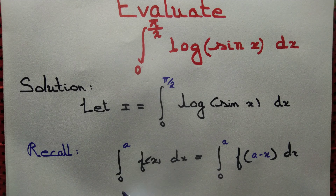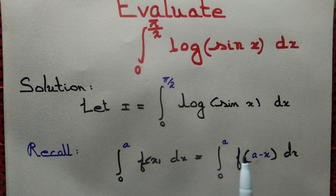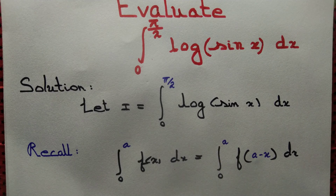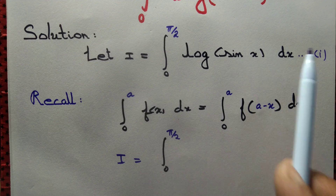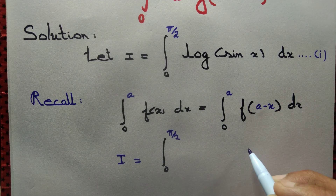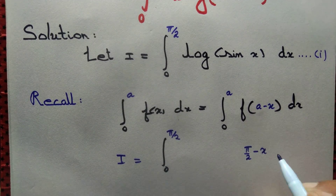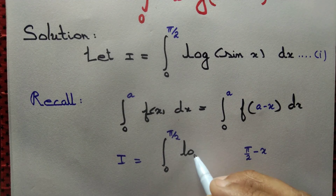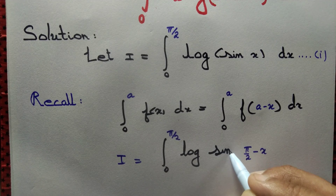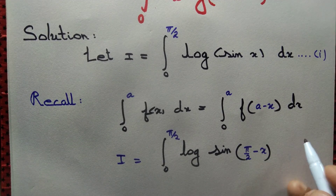One of the properties states: the integral from 0 to a of f(x) dx equals the integral from 0 to a of f(a − x) dx. What we do is replace x by a − x. So here, i equals the integral from 0 to π/2 of log(sin x) dx, and we replace x by π/2 − x. The rest of the expression we copy as is — we had log(sin x), and now we have log(sin(π/2 − x)) dx.